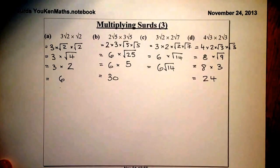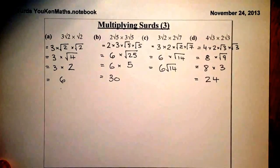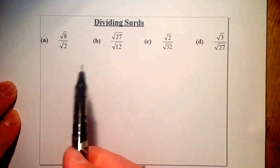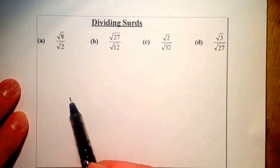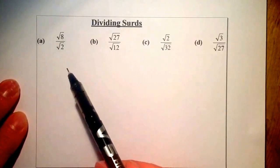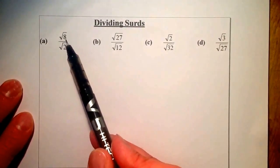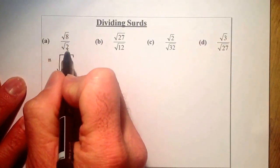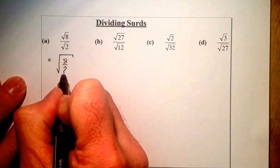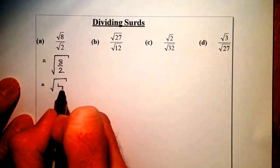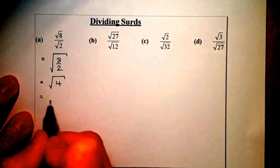That's the multiplying of surds — I'll deal with multiplying surds in brackets in a separate clip. Now let's look at dividing surds. There are two ways to do that: I can combine the surds into one big surd and divide the numbers inside it, or I can simplify one of the surds and cancel by dividing top and bottom. For root 8 divided by root 2, I'll combine them into a fraction: root 8 over root 2 gives me root 4, and the square root of 4 is 2.